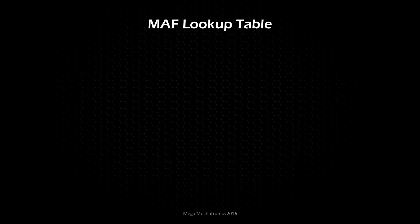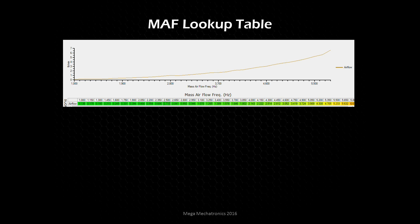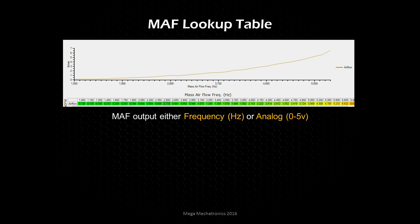Moving on to the mass airflow strategy — instead of speed density we're looking at MAF tuning. The mass airflow lookup table is only two-dimensional, so it's a simple 2D graph rather than a 3D representation. The MAF sensor outputs either a frequency — like General Motors uses in hertz, where higher frequency means more airflow — or an analog 0-to-5 volt signal where higher voltage means more airflow. On the chart, the x-axis is frequency and the y-axis is actual airflow in pounds per minute. At 4600 Hz, for example, the reading is 3.052 pounds per minute.